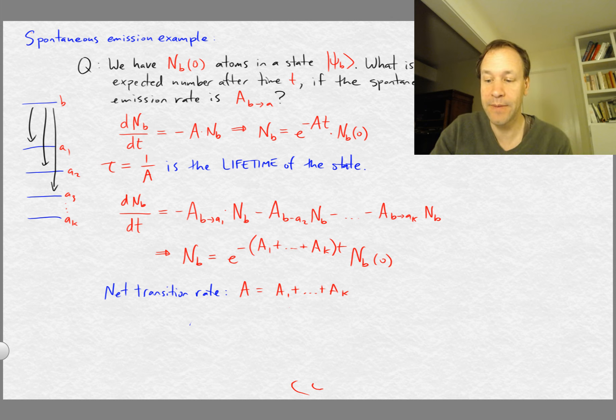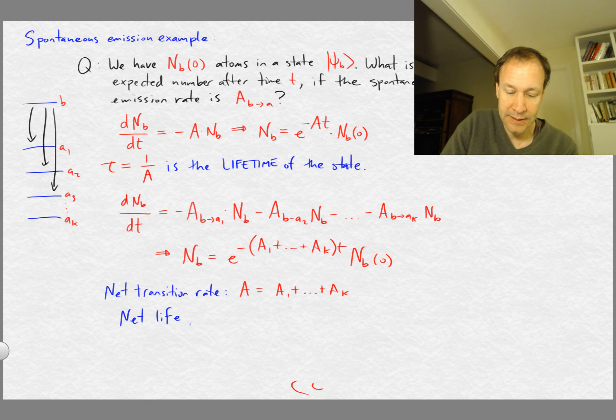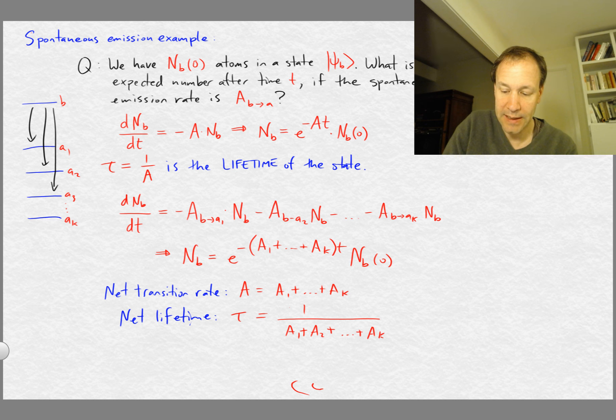And so we can see that the net transition rate, that's just going to be A equals A_1 plus A_k. And then if we want to know the lifetime in that more complicated situation, so I'll call that the net lifetime, that's going to be tau and that will be 1 over A_1 plus A_2 plus up to A_k.